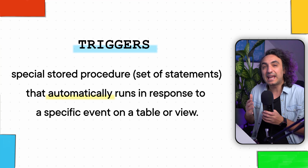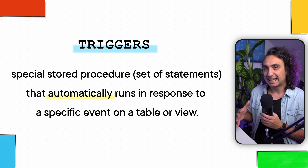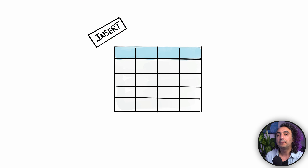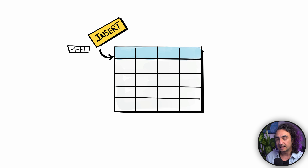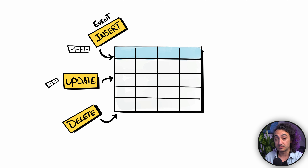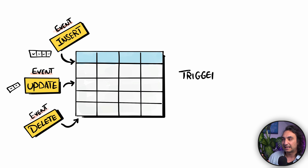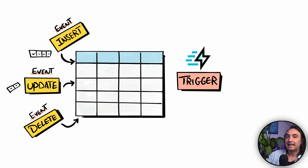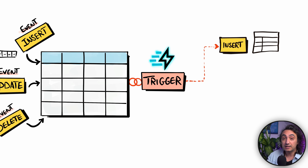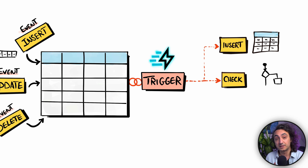What does this exactly mean? Let's say we have a table in our database and something could happen to this table — like inserting data, deleting, updating — all those things that happen we call them events. We can attach a trigger on top of this table, and each time an event happens like insert, update, or delete, something else can be triggered — like inserting data somewhere else in another table, doing a check whether we are allowed to delete the data, or sending a warning message.